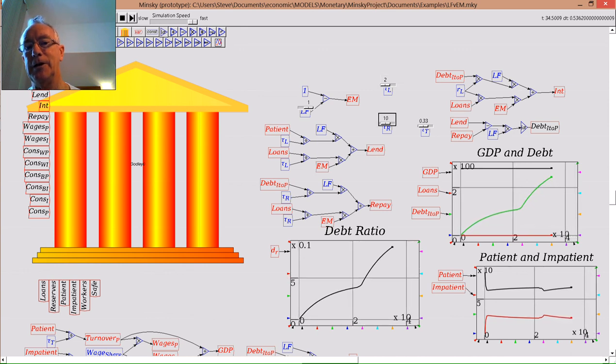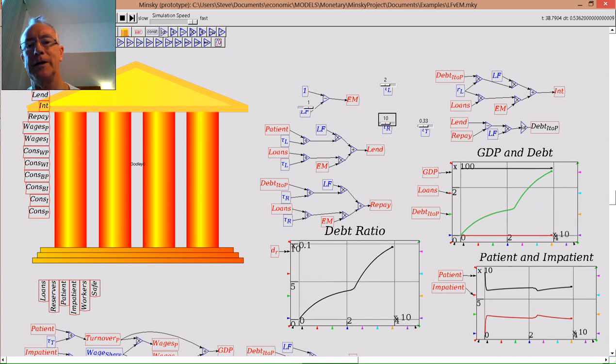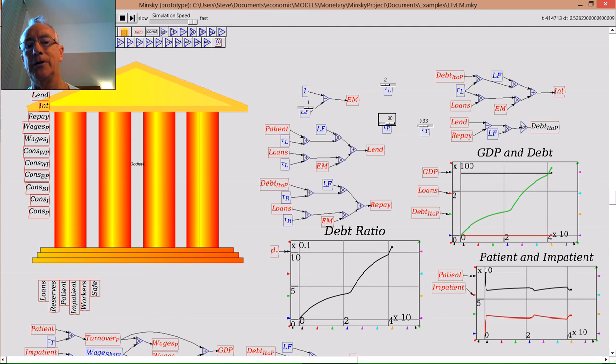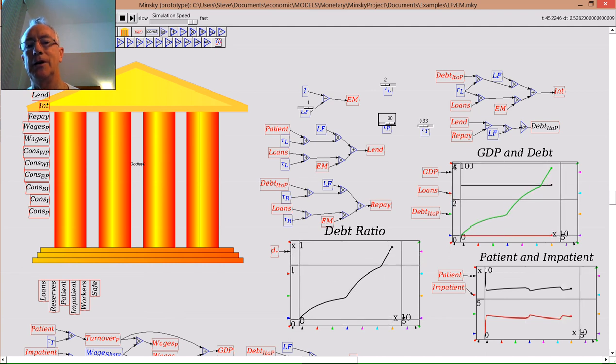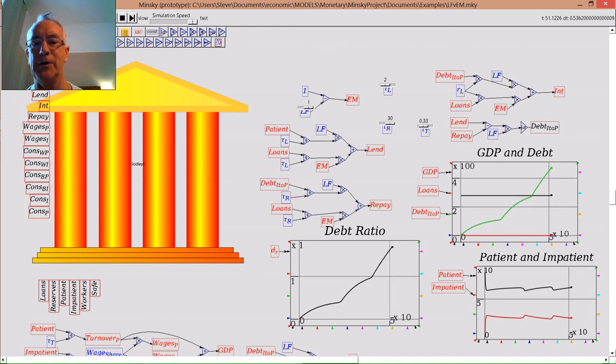And if I delay how long the impatient agent takes to repay, from say a 10-year cycle to way out to 30, then again the debt ratio rises and actually exceeds GDP here, but nothing happens to GDP at all.